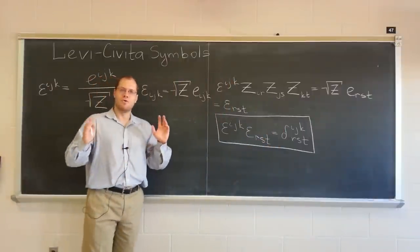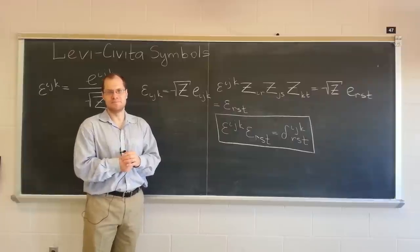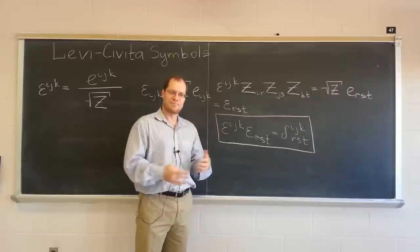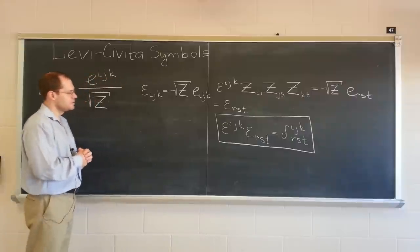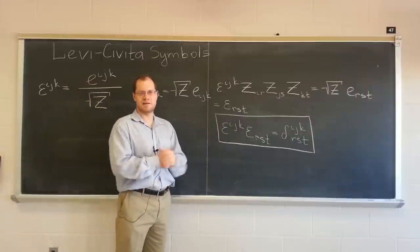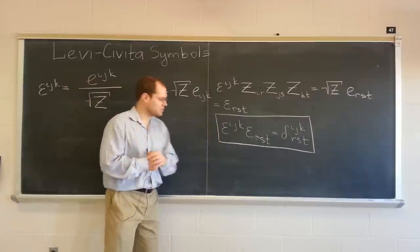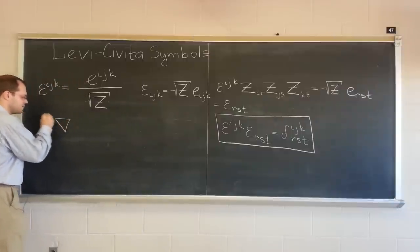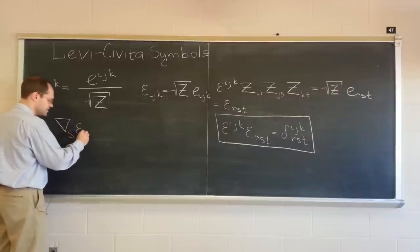And now, I just have one more thing to mention about the Levi-Civita symbol. And once again, we'll talk about vector products and curls in the future, in the near future, in fact. So the problem, the issue, the property that I would like to mention is the metronilic property. So the question is, what happens when you apply the covariant derivative to a Levi-Civita symbol?